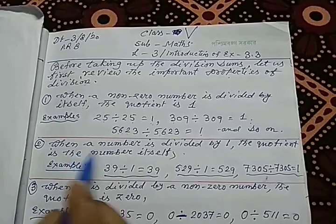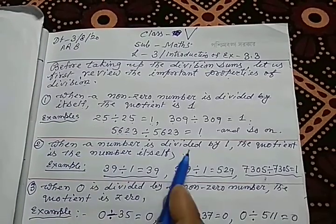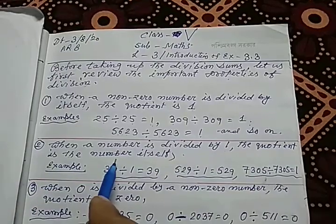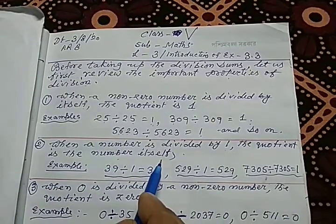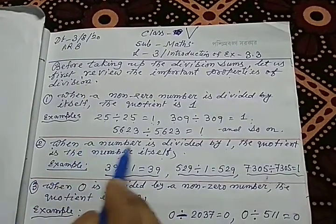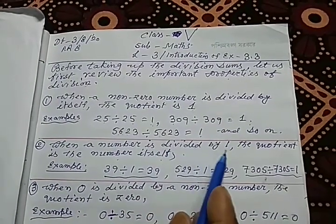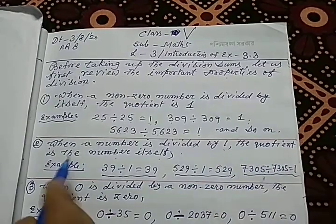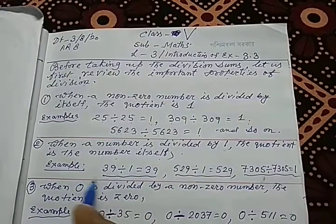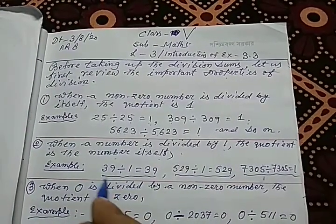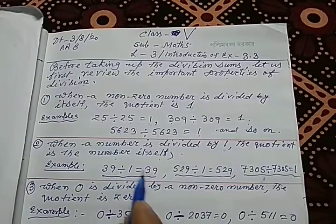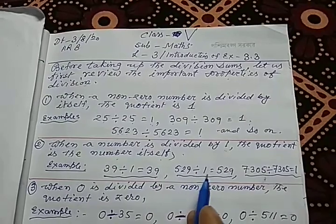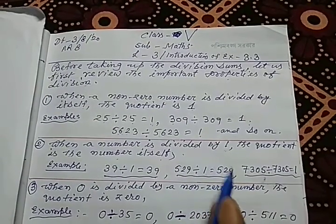Second property: when a number is divided by 1, the quotient is the number itself. Any number, if you divide by 1, the quotient is the number itself. For example, if 39 is divided by 1, you will get quotient 39. If you divide 529 by 1, you will get quotient 529.